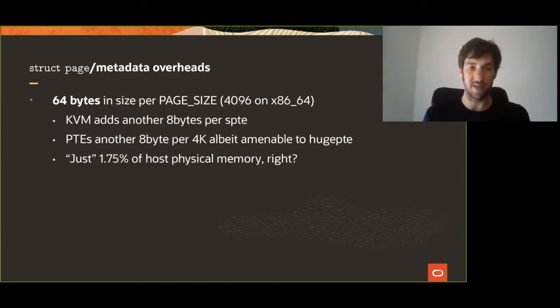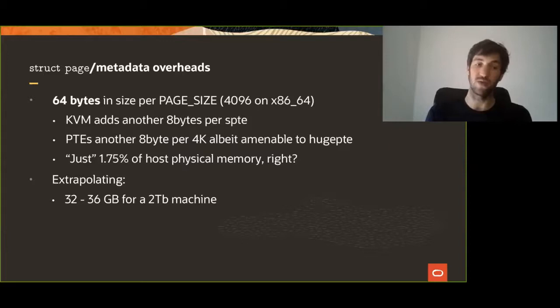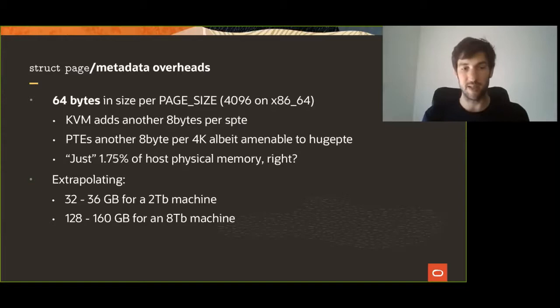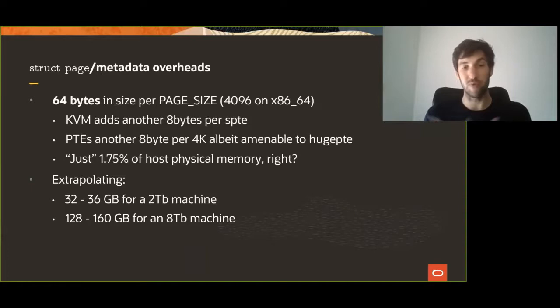But let's revisit what that actually means in practical terms. If we extrapolate that to say 2 terabytes of memory, we are spending about 32 to 36 gigabytes of memory — roughly 16 gigs per terabyte. And if you work with a slightly bigger machine, like an 8-terabyte machine, you spend about 128 to 160 gigabytes of memory. These are not crazy numbers — these are actually numbers on machines we have problems with, where a lot of this memory you're spending could hopefully be used to boot more guests.